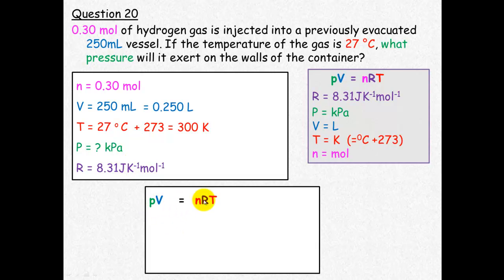Put this information into PV equals nRT. Solving for P gives 3000 kilopascals.